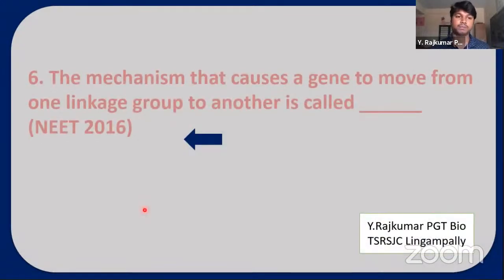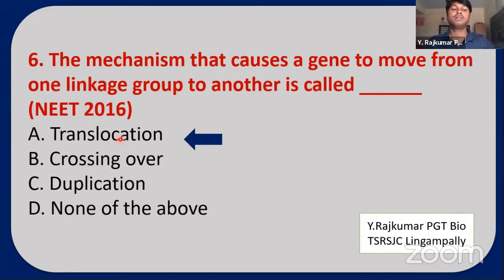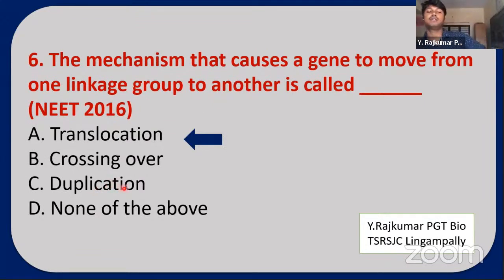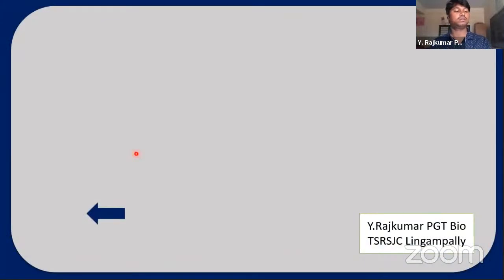Next NEET question: The mechanism that causes a gene to move from one linked group to another is called? Options: crossing over, translocation, duplication, none of the above. The answer is translocation — crossing over means exchanging genes between homologous chromosomes, but moving from one linked group to another is translocation, because it transfers from one location to another.